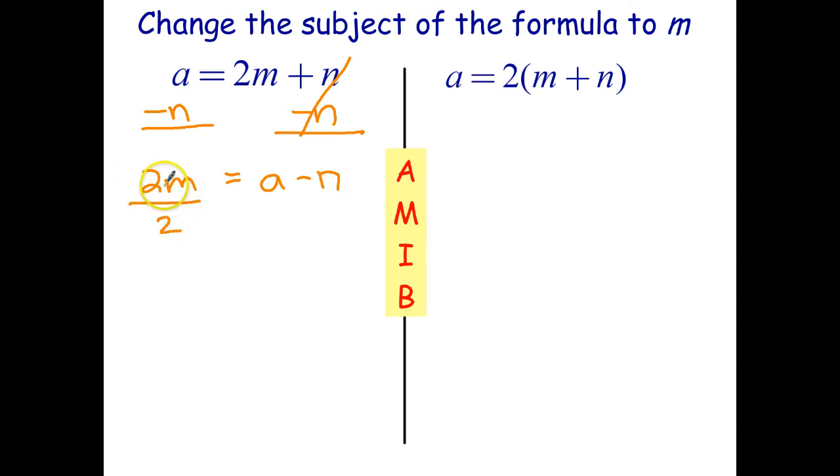And then to get rid of the 2, I just divide by 2, since that's multiplied. The opposite of multiplying is divide. And I divide all of that side by 2. And the equation is m equals a take n all over 2.